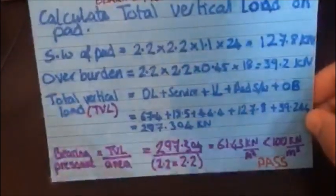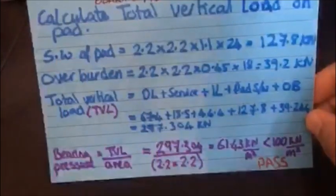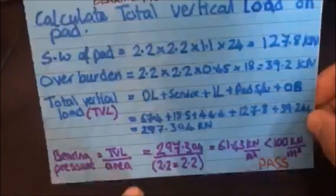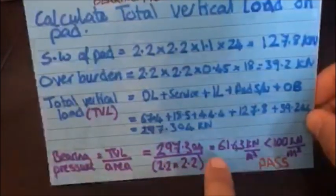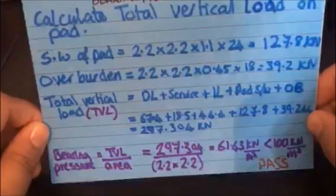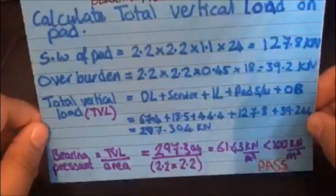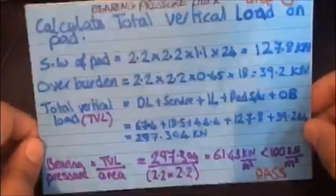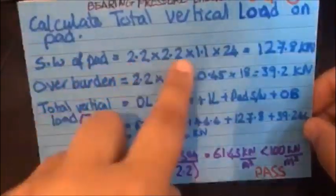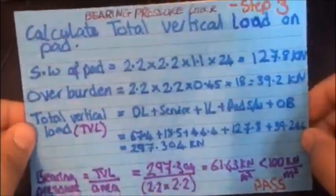So we know our total vertical load and we know our area because we've said our pad dimensions are going to be 2.2 by 2.2 by 1.1. So once we've done this, we get a total bearing pressure of 61.46 kilonewtons per meter squared. And this is less than the allowable bearing pressure, which is 100 kilonewtons per meter squared. Therefore, for this pad foundation with these dimensions, the bearing pressure passes.